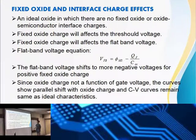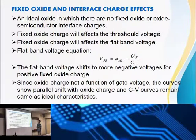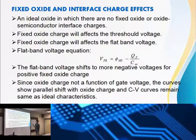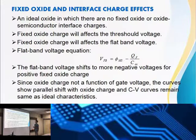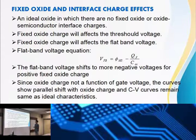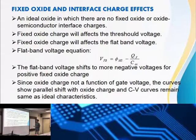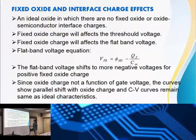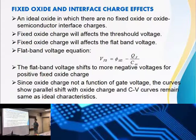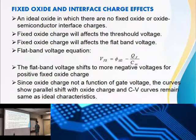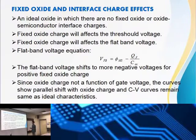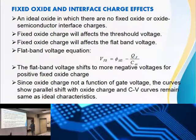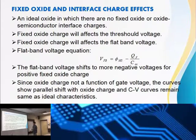An ideal oxide is one in which there are no fixed oxide or oxide semiconductor interface charges. Fixed oxide charge will affect the flat band voltage. The flat band voltage equation is VFB equals VMS minus QF over C. The flat band voltage shifts to more negative voltages for positive fixed oxide charge. Since oxide charge is not a function of gate voltage, the curves show parallel shift and CV curves remain the same as ideal characteristics.